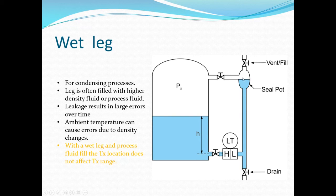The seal pot serves two purposes: it provides a volume to contain condensate, and it prevents the liquid from evaporating out of the leg — because if the liquid evaporated, that would cause drift on the sensor. The extra volume maintains a more consistent measurement for a longer period of time. With a wet leg and process fluid fill, the transmitter location does not affect the transmitter range, because the leg height relative to the cell remains essentially constant.